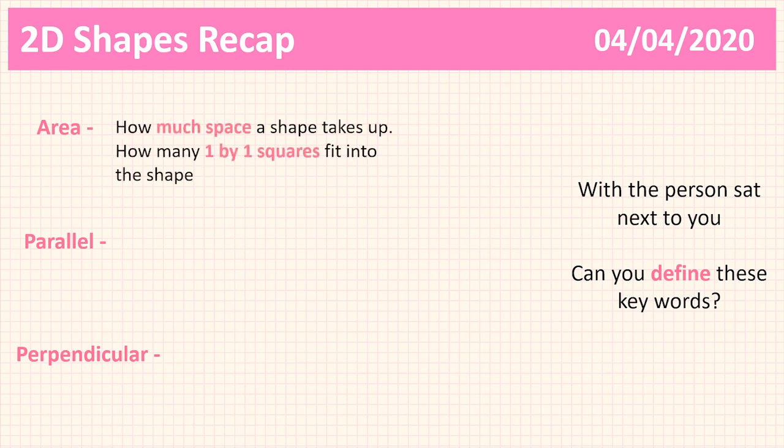Area is how much space a shape takes up, and we usually denote that with 'squared' — centimetre squared, metre squared, and so on. It's because of how many one-by-one squares fit into that shape.